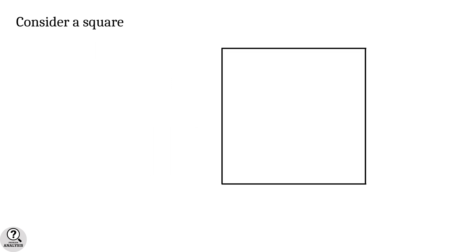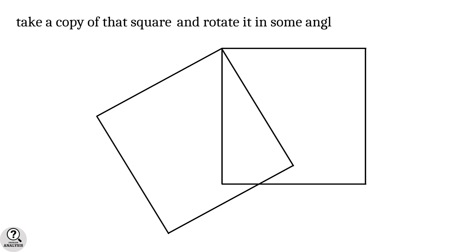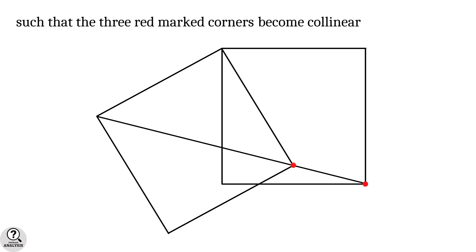Consider a square and take another copy of that square. Now rotate that square in some angle such that the three red marked corners become collinear. Then my problem is, what is this red marked angle?